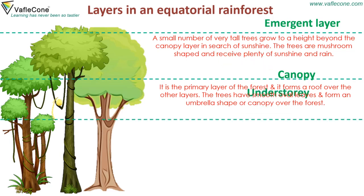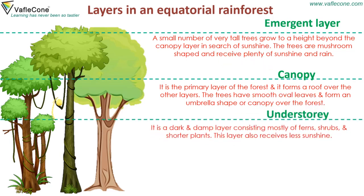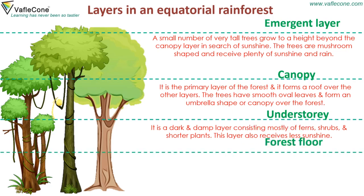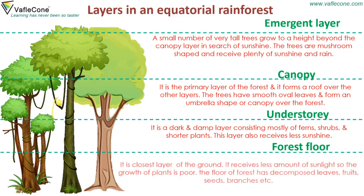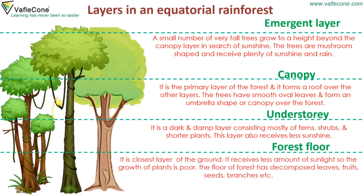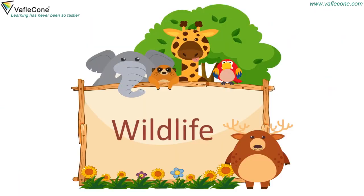Understory: It is a dark and damp layer consisting mostly of ferns, shrubs and shorter plants. This layer also receives less sunshine. Forest Floor: It is the closest layer to the ground. It receives less amount of light so the growth of plants is poor. The floor of the forest has decomposed leaves, fruits, seeds, branches, etc.